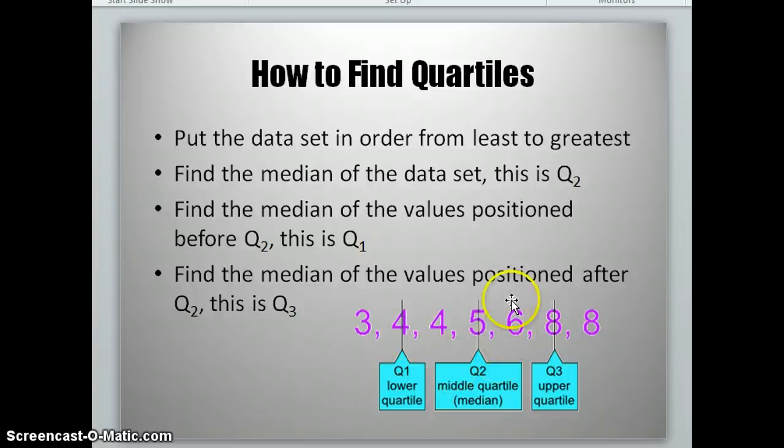Then we're going to look at the three values that are positioned after our median, or Q2. In this case, the numbers 6, 8, and 8. We're going to find the median of those three numbers, which we have as the number 8. And that will be our third quartile, or Q3.